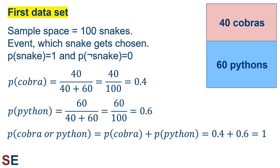Now let's think about the probability of choosing a cobra. That probability would be the number of individuals that satisfy our condition — 40 — divided by the total number of individuals in the sample space, the 40 cobras plus the 60 pythons, which equals 100 snakes. Making that division gives us a probability of 0.4.